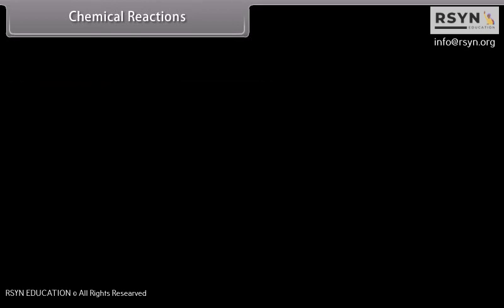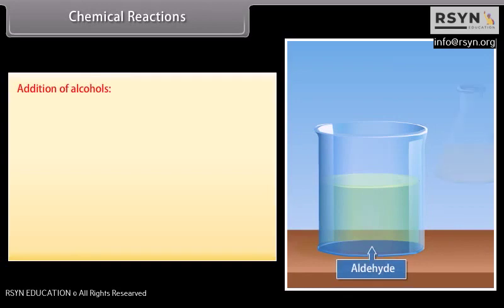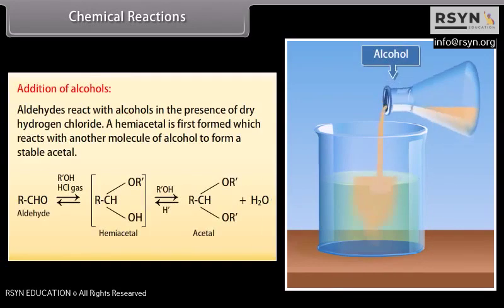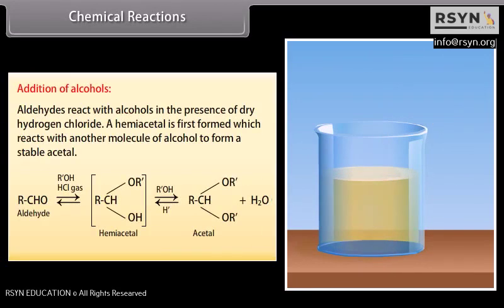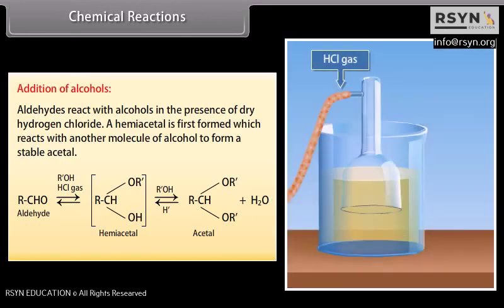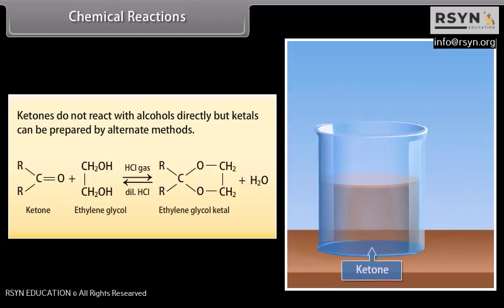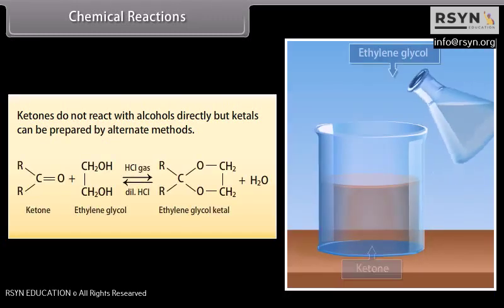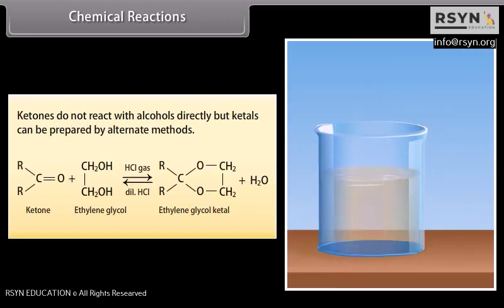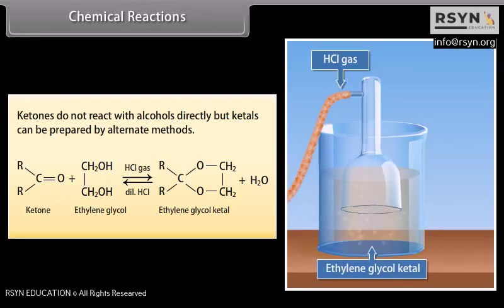Addition of alcohols: aldehydes react with alcohols in the presence of dry hydrogen chloride. A hemiacetal is first formed which reacts with another molecule of alcohol to form a stable acetal. Ketones do not react with alcohols directly, but ketals can be prepared by alternate methods. Ketone reacts with ethylene glycol in the presence of hydrochloric gas to form ethylene glycol ketal along with water.